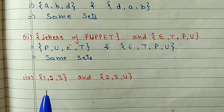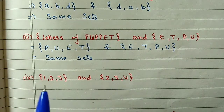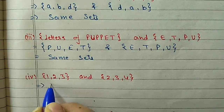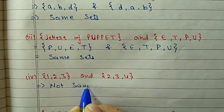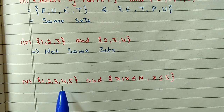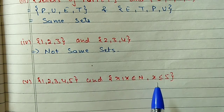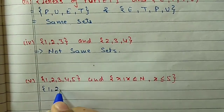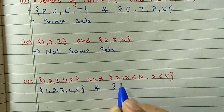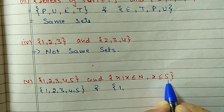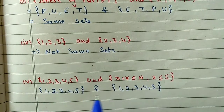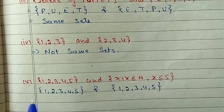Part (iv): The first set is {1, 2, 3} and the second set is {2, 3, 4}. Here, 1 is not in the second set and 4 is not in the first set, so these two sets are not the same. Part (v): The first set is given in tabular form and the second in set-builder form. Converting: natural numbers less than or equal to 5 gives 1, 2, 3, 4, 5. After converting to the same form, both sets are the same - they are equal sets.